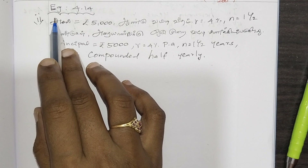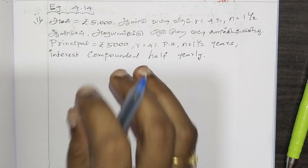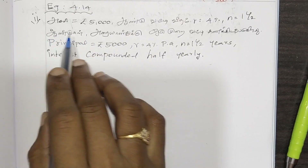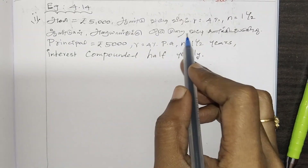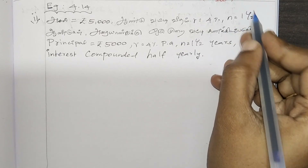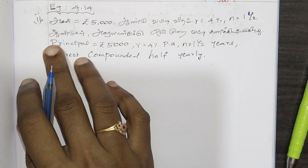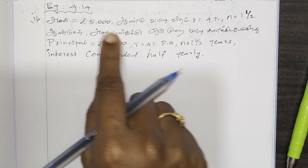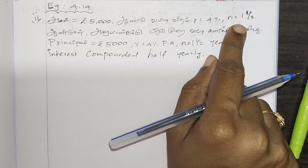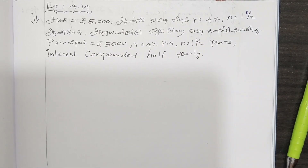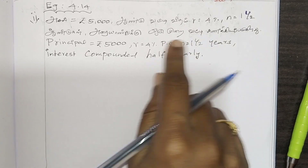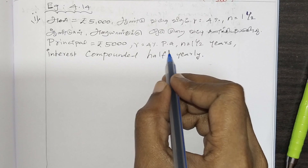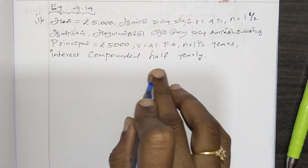The first question is Example 4.14 from the 8th math book, 4th chapter, Example 4.14, second sum. R equals 4 percent, n equal to 1 and 1 by 2 years, with interest compounded half yearly.